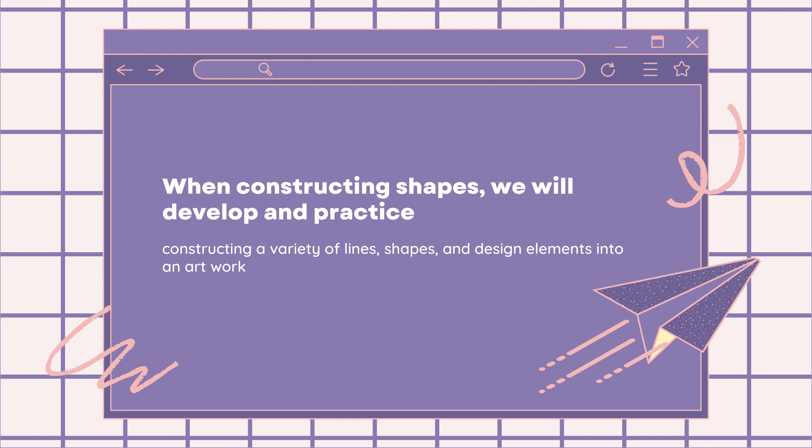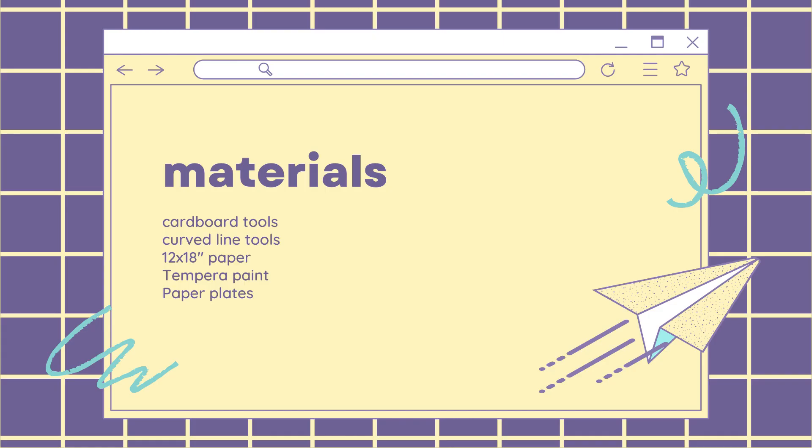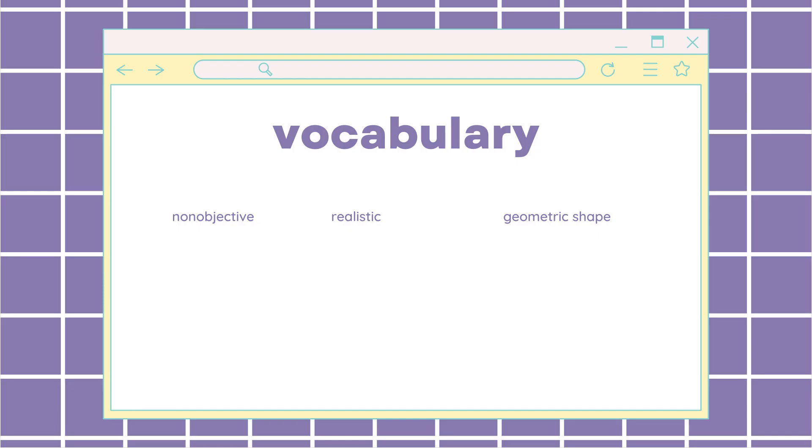When constructing shapes, we will develop and practice constructing a variety of lines, shapes, and design elements into an artwork. Materials: cardboard tools, curved line tools, 12 by 18 inch paper, tempera paint, and paper plates. Vocabulary: non-objective, realistic, and geometric shape.